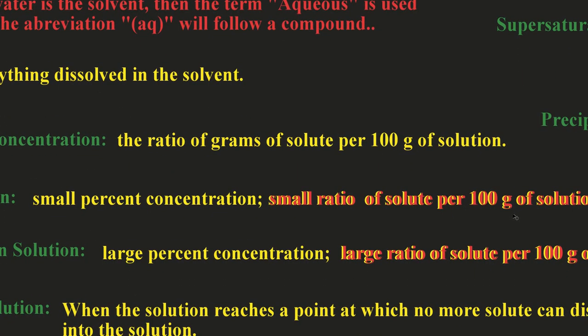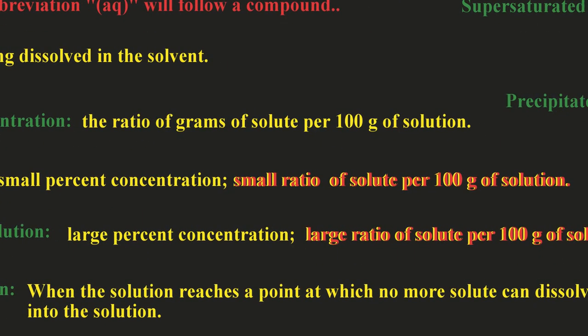So tea would be the solute in that example and the water would be the solvent. In a concentrated solution though the tea would be very strong and we would have a large ratio of solute per hundred grams of the tea or solution.